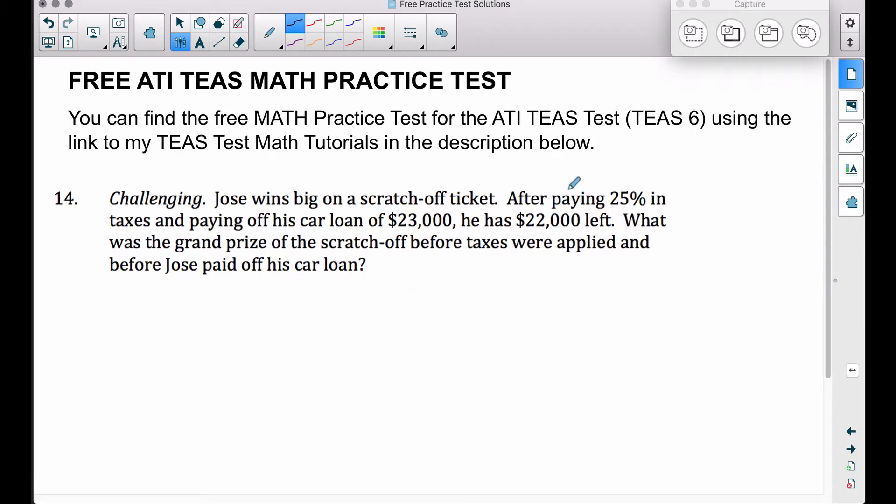So let's kind of work backwards through this. We know he pays 25% in taxes, he paid off his car loan of $23,000, and he has $22,000 left after doing all this. So therefore, we're trying to figure out how much money he won before all of this stuff was applied, before the taxes, before the car loan.